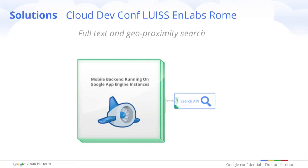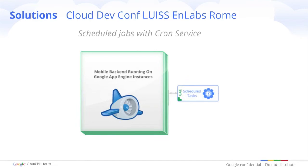In addition to task queues, there are also scheduled tasks. If you need scheduled tasks for your application — like recurrent updates, or a message that needs to be sent at a certain time of day to your users — that is also a component of App Engine you may want to use in a mobile scenario.